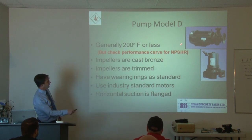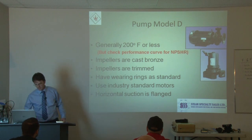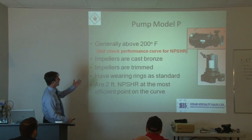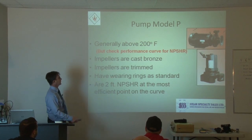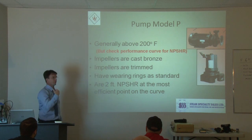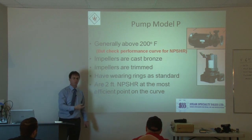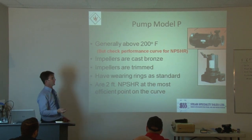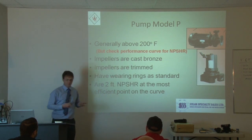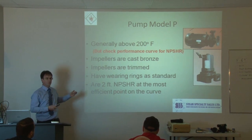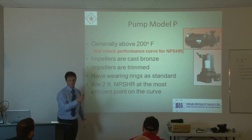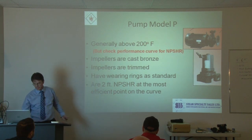Horizontal suction is flanged - they have either horizontal or vertical, depending on space required or customer preference. Model P is for higher temperatures or higher pressures. They also use them in Denver because it's 5,000 feet above ground. The lower pressure means a lower boiling point, so condensate reaches boiling point much quicker than at sea level. That's why they use Model P pumps in higher elevations.